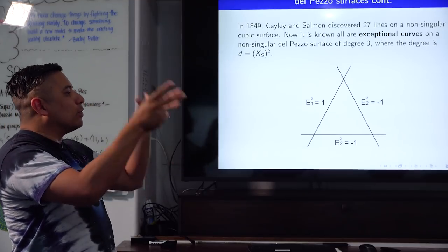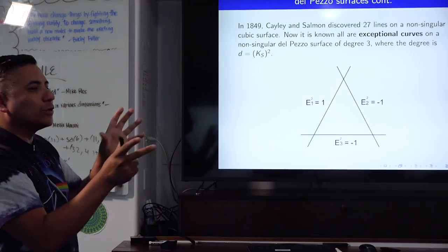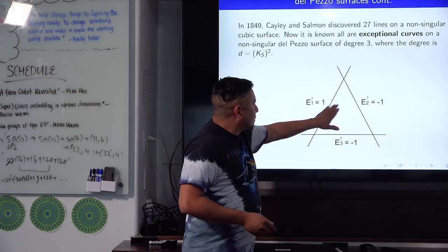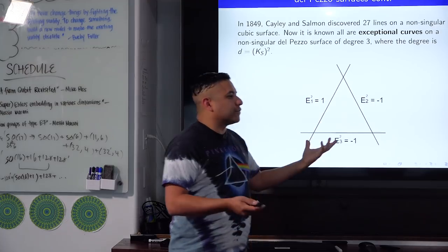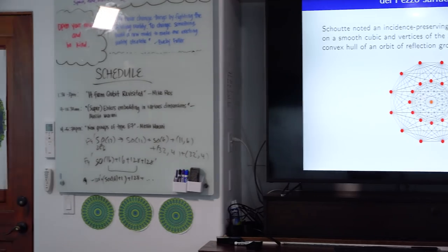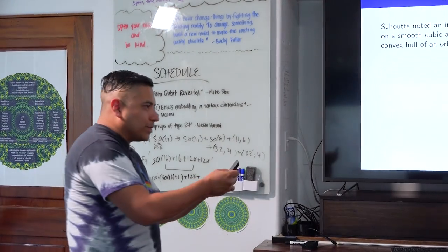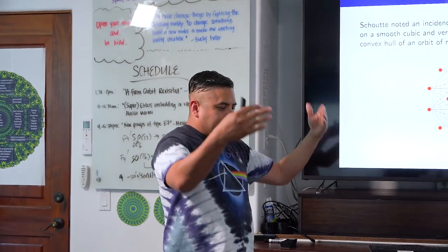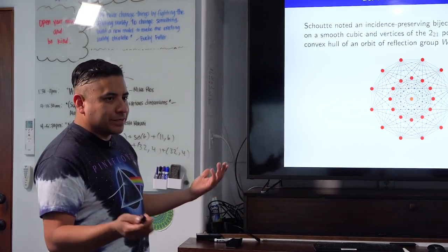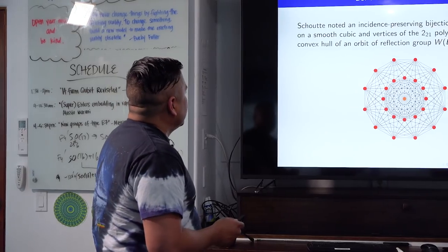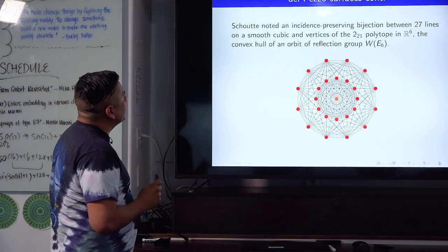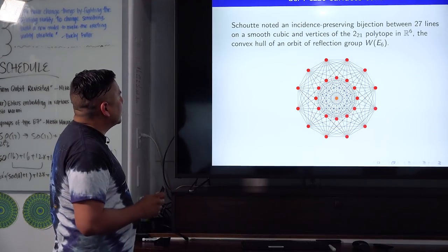When you blow up a point on a surface, instead of the point you get its own sphere — you're trading the point for the space of lines through it, which looks like a sphere, which looks like a qubit space CP1. These blow-ups give you exceptional curves, giving you a configuration of them. You can look at the surface in terms of a bunch of qubit spaces or purely in algebraic geometry.